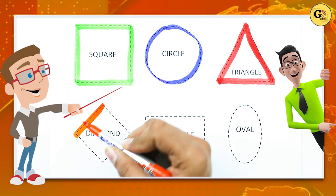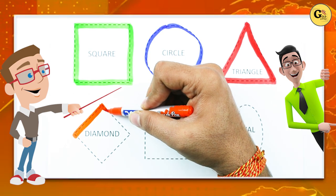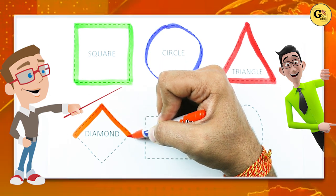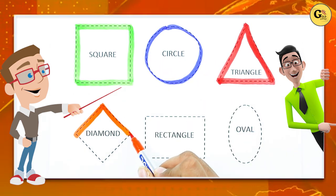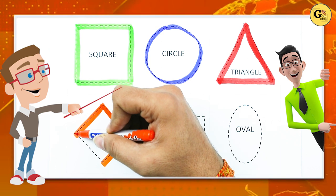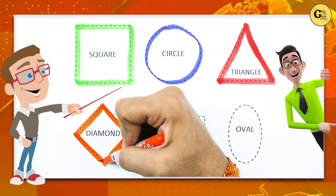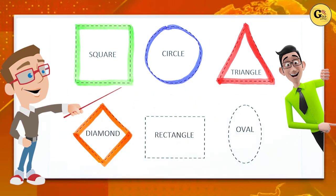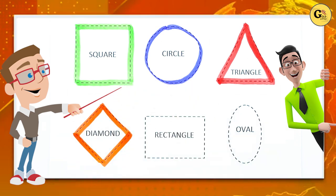One sliding line, two sliding line, three sliding line, four sliding line. It's a diamond, orange color.